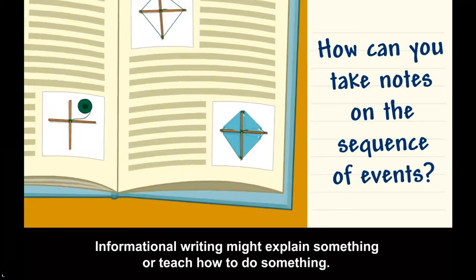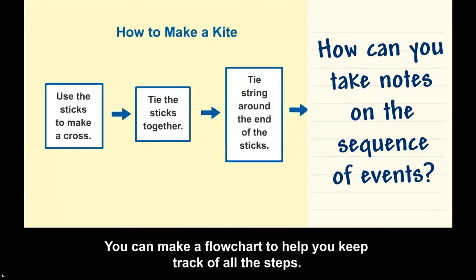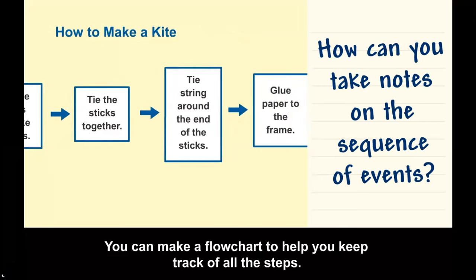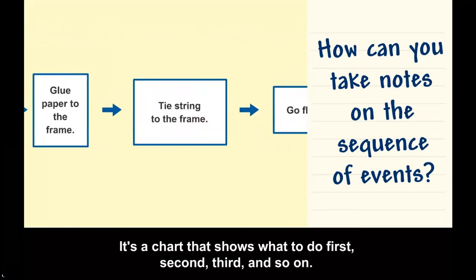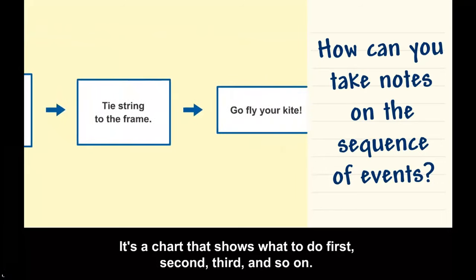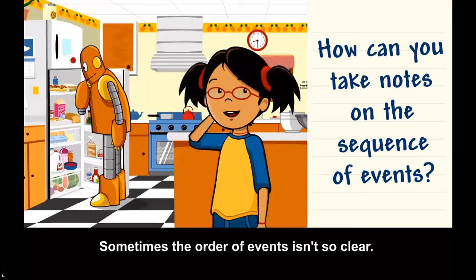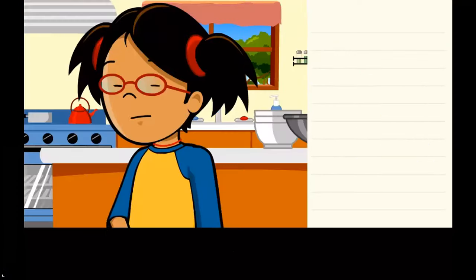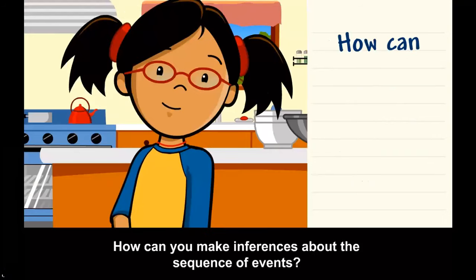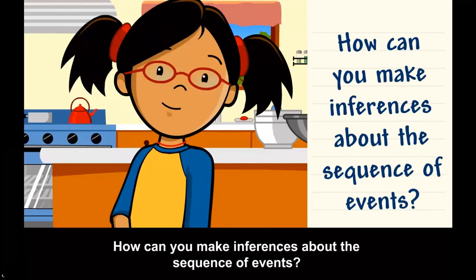Informational writing might explain something or teach how to do something. You can make a flow chart to help you keep track of all the steps — it's a chart that shows what to do first, second, third, and so on.